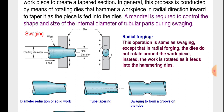Radial forging. This operation is the same as swaging, except that in radial forging the dies do not rotate around the workpiece. Instead, the work is rotated as it feeds into the hammering dies.